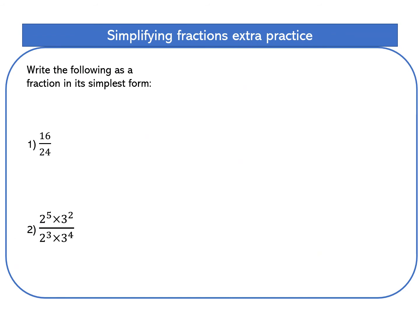Write the following fraction in its simplest form. What's the highest common factor of 16 and 24? Four goes into both, but eight is that factor that's common to both. That's the highest. So divide that by eight, I get two. Divide that by eight, you get three. That's finished off.